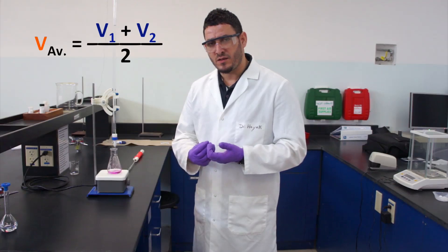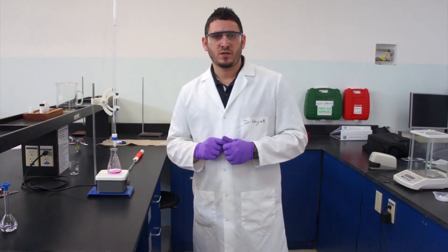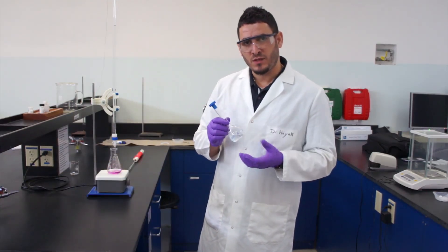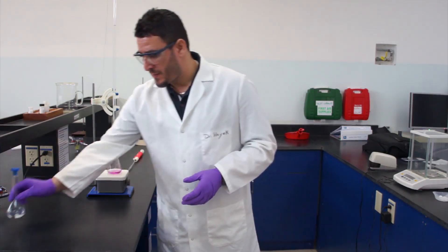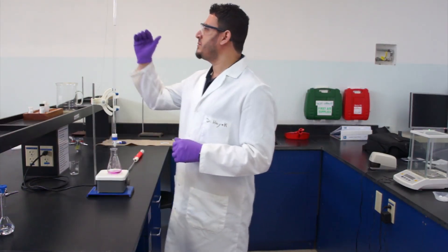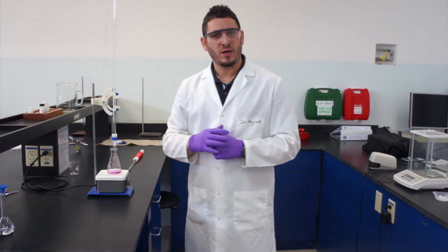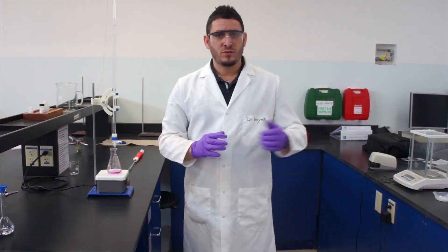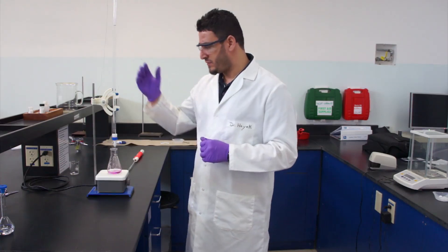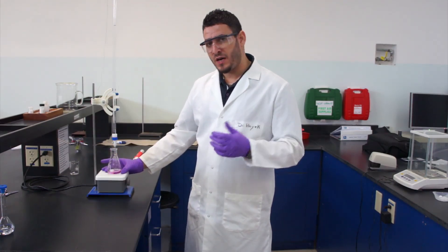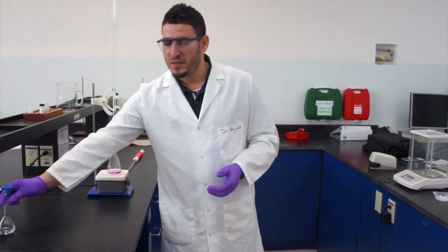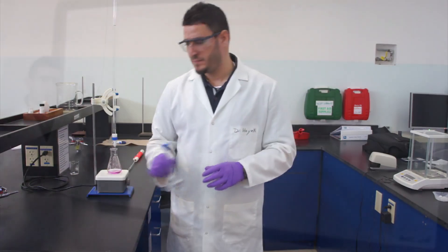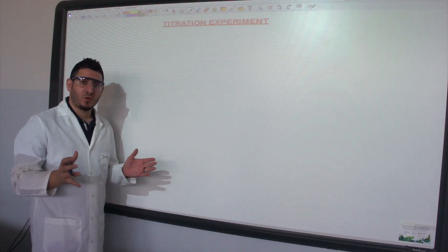To be precise and accurate with the titration, it's always recommended to repeat your titration two times and then take the average volume. Now let's look at how we can figure out the concentration of the hydrochloric acid solution. We need to look at the burette and record the volume of sodium hydroxide added. I know the volume of NaOH added, I know its concentration, and I know I used 10 mL of HCl.